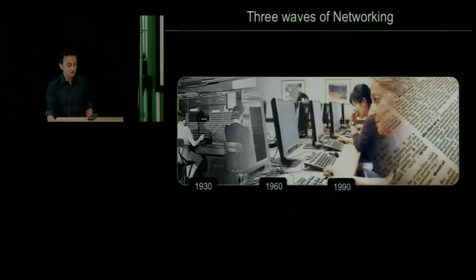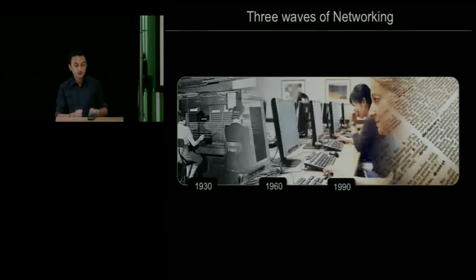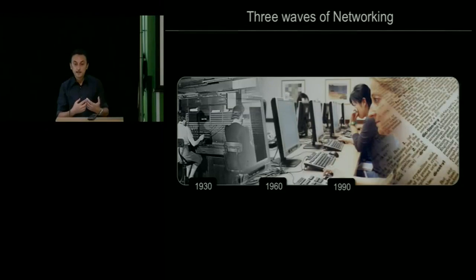Before I get started, I'd like to go over the different waves that networks have been going through over the years. At the beginning of networking, from the 30s to the 60s, the focus was wires and voice communication among people. In the second phase, after the 60s, the internet was created and built on top of the telephone network for computers to talk to each other. Then in the 90s, the web started and used the internet as a platform for people to access content, becoming the most successful application running on top of the internet.